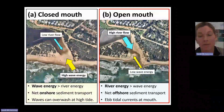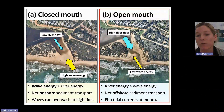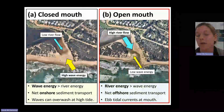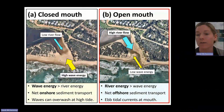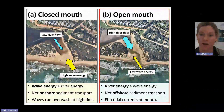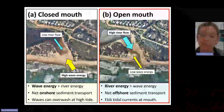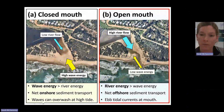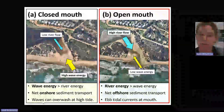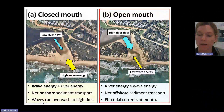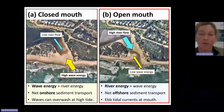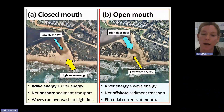Sometimes if the estuary is really full or really perched, we can get waves overwashing at high tide, and then as the tide falls, that might actually breach through water seeping through the berm. When we have our open entrance conditions like you can see here, the impact of tides actually becomes quite important in maintaining the open entrance.